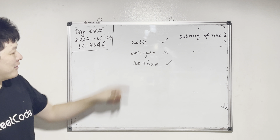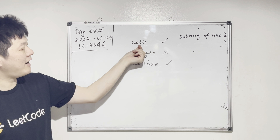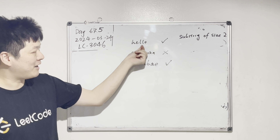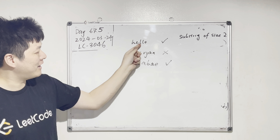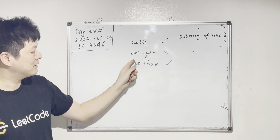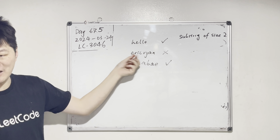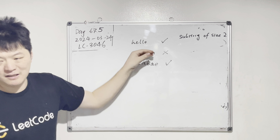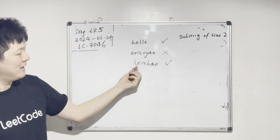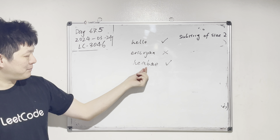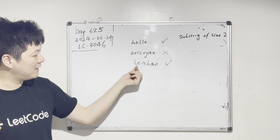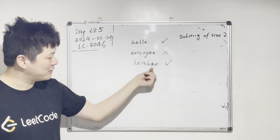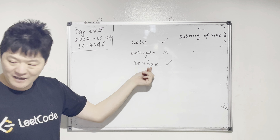So for example, 'hello' — yes, because 'ol' is in the reverse of 'hello', which is 'o', 'l', 'l', 'e', 'h', right? And 'Eric Ryan' — we can't find any substring of size 2 that appears in the reverse version of 'Eric Ryan'. And this one, yes, because 'ea' appears in the reverse of it, which is 'e', 'a'. Make sense?